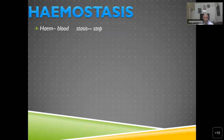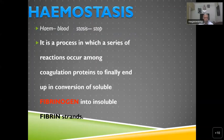In most cases, I'll go through rapidly because we have very little time. The definition — we may ask you what is coagulation or hemostasis. It is a process in which a series of reactions occur among coagulation proteins to finally end up in conversion of soluble fibrinogen into insoluble fibrin strands.